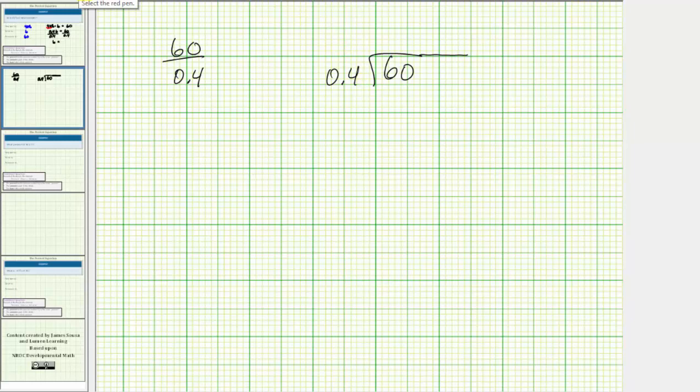Let's write this quotient in long division form, so we'd have 60 divided by 0.4. The first step is to make the divisor a whole number. To do this, we move the decimal point to the right one place. We can do this as long as we do the same to the dividend. Move the decimal point up into the quotient and add a zero for the missing digit.